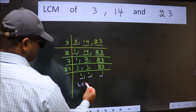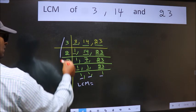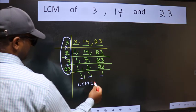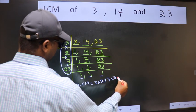So our LCM is the product of these numbers, that is 3 into 2 into 7 into 23.